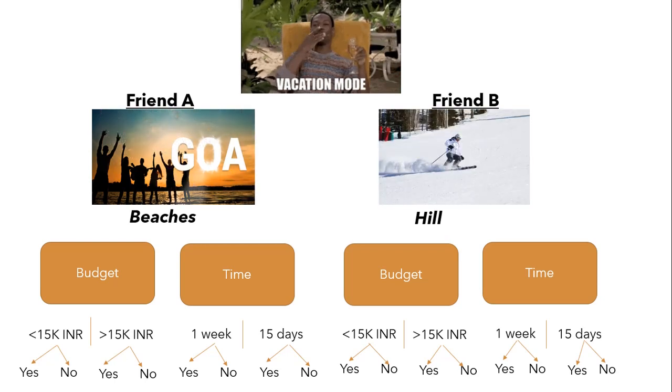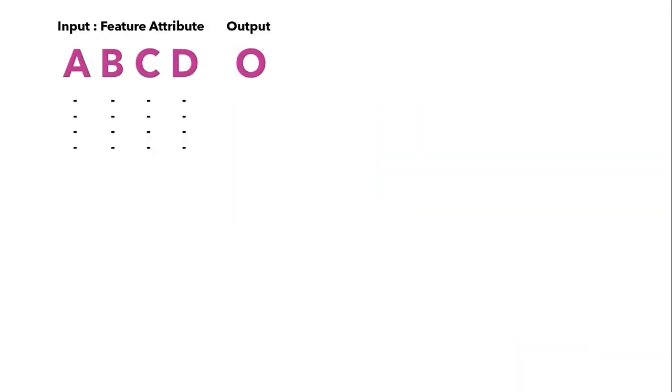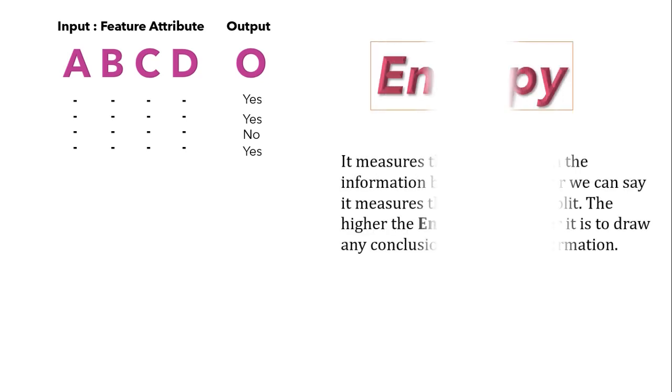Let's understand these one by one. Let's say we have some feature attributes that is A, B, C, D as input and O as output which is having either yes or no values. Based on different attributes, we have to predict whether output will be yes or no. According to ID3 algorithm, our first step is to select the right attribute for splitting. For considering which attribute we should use to split the tree, we use entropy function. If we don't select the right attribute, then our tree will go till much depth and increase the time complexity as well.